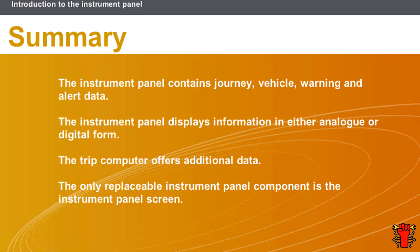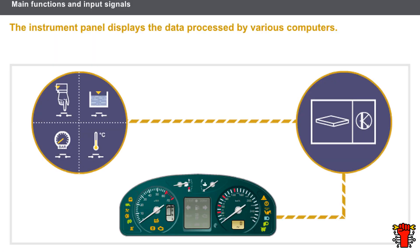In this section, we covered the following points: The Instrument Panel contains Journey, Vehicle, Warning and Alert data. The Instrument Panel displays information in either analogue or digital form. The Trip Computer offers additional data. The only replaceable Instrument Panel component is the Instrument Panel screen.